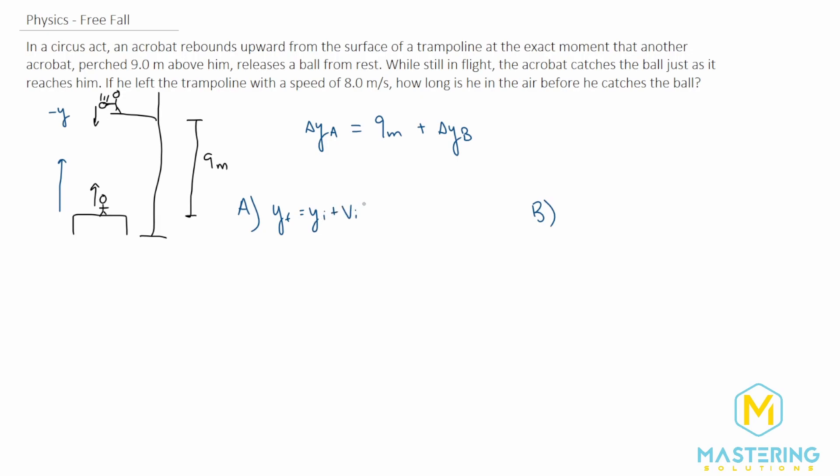plus v_i times t plus one half times acceleration times t squared. We can get rid of some of these things first, of course. For the acrobat, his y_initial obviously is going to be zero. He is starting right down here. Now everything else is going to be in there. We have an initial velocity and we have acceleration, which in this case will be gravity.